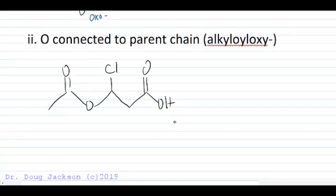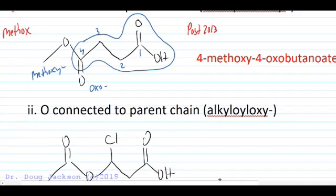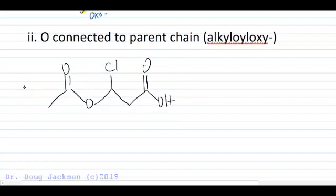The other scenario is if the oxygen, see before we had the carbonyl of the ester connected to the parent chain. Well, what if we had a higher priority group than an ester, a carboxylic acid? I'm going to circle the parent chain like we always do, the longest carbon-to-carbon chain and the highest priority group in the chain. And then we're going to name the groups.